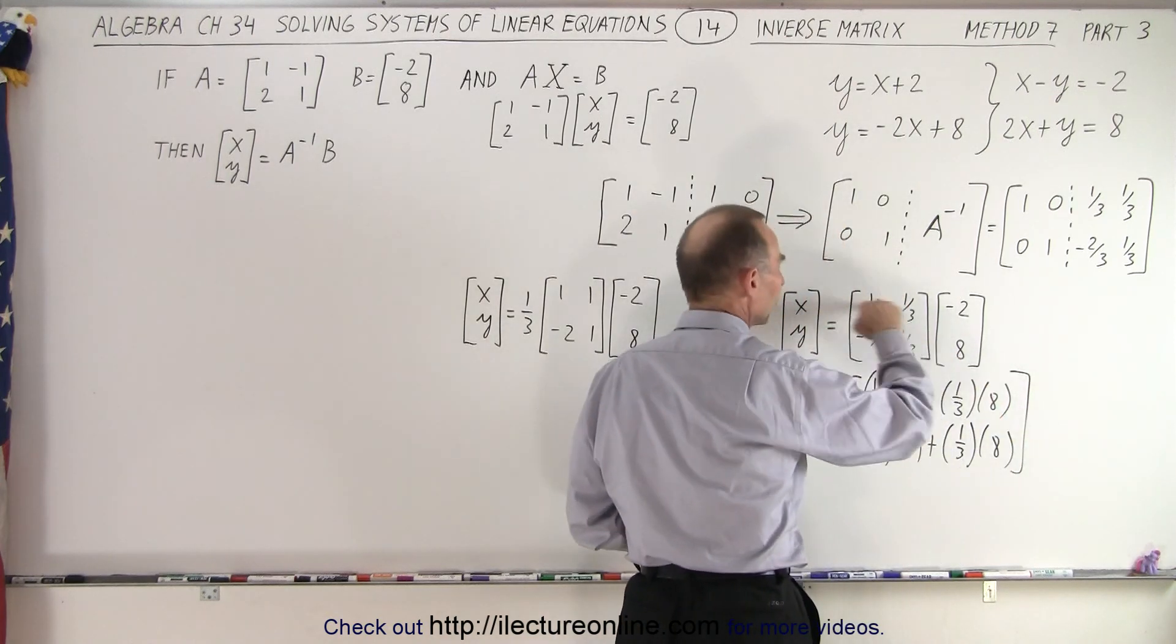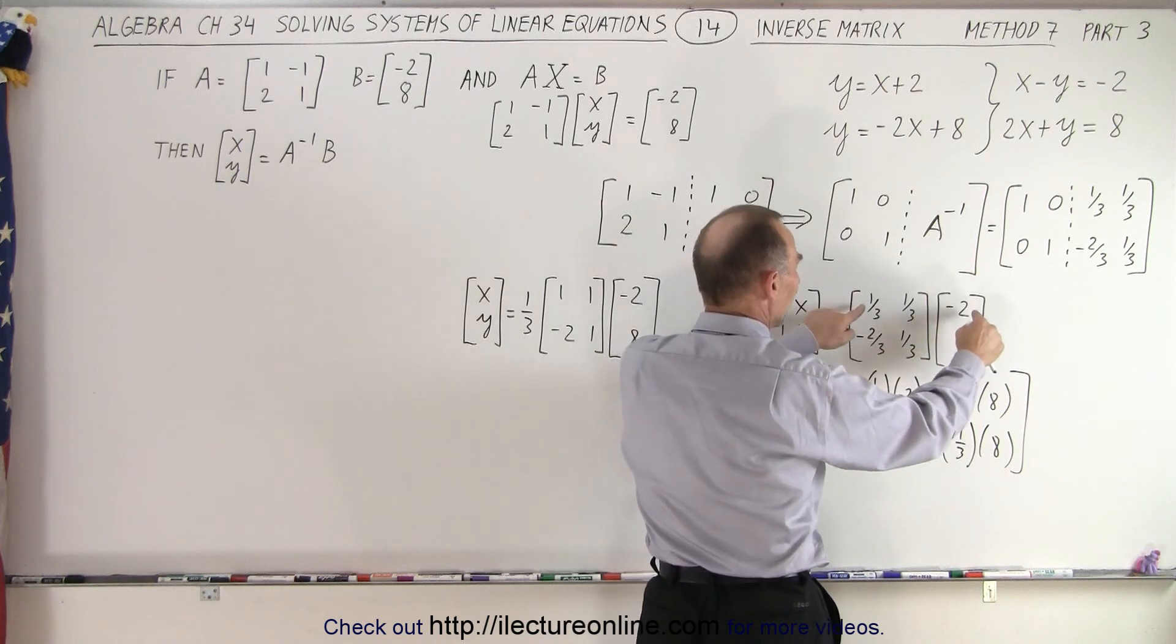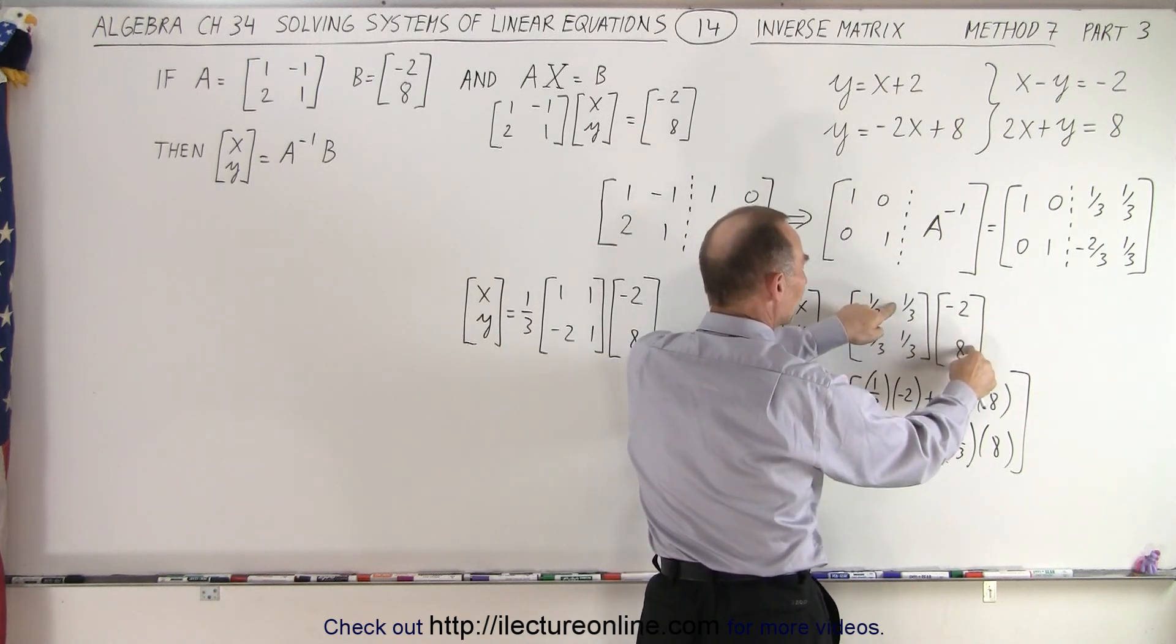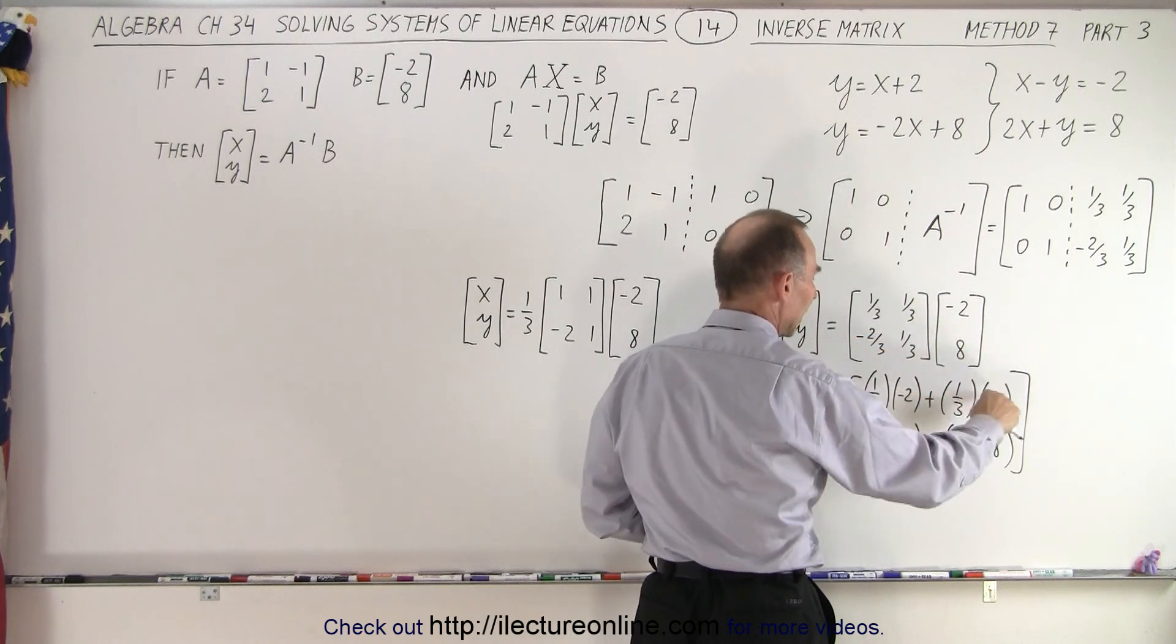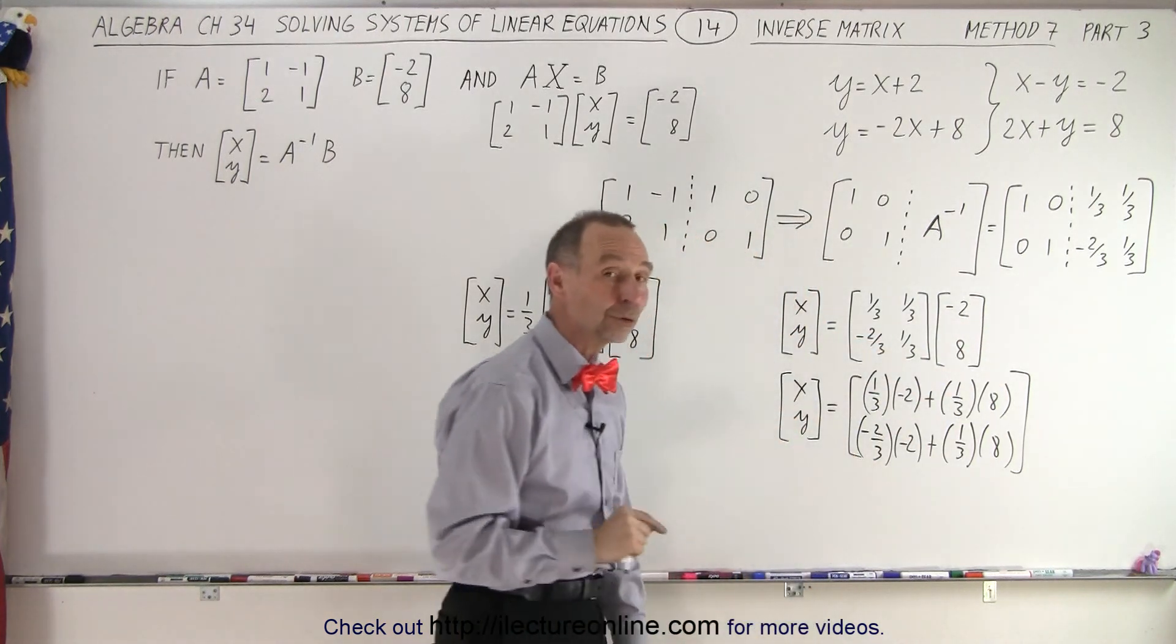Notice, I went across this way and down this way. So one third times negative two, one third times eight. Negative two thirds times negative two, one third times eight. And those will then be the values belonging to x and y.